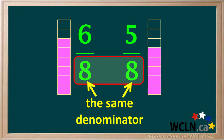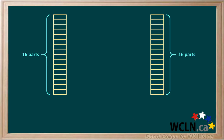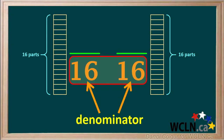Moving the fractions together, the fractions 6 eighths and 5 eighths have the same denominator. Fractions that have the same denominator are said to have a common denominator. These two fractions have the denominator 8 in common. Now we'll divide each of the two rectangles into 16 parts, so fractions based on these will both have a denominator of 16. We can also say they have a common denominator of 16. Because they have a common denominator, it's easy to compare fractions based on these.